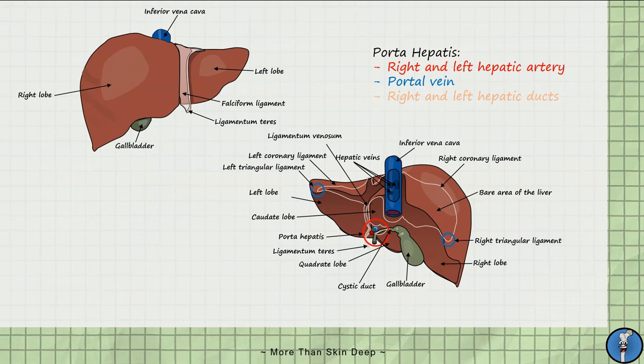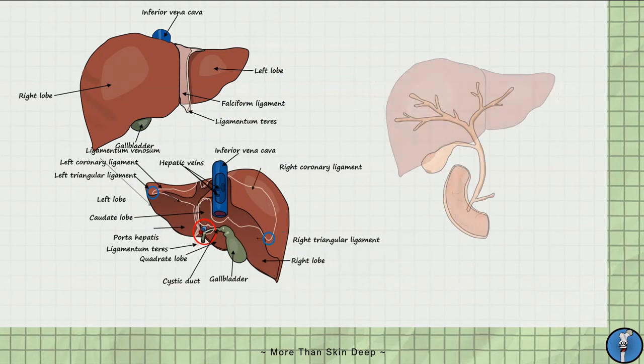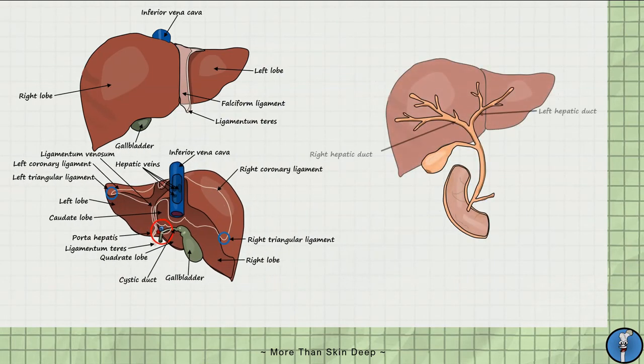Now let us explore the anatomy of the biliary tree. It begins with the right and left hepatic ducts, which drain bile from the liver. They combine to form the common hepatic duct. Bile is stored and concentrated in the gallbladder via the reabsorption of water and electrolytes.